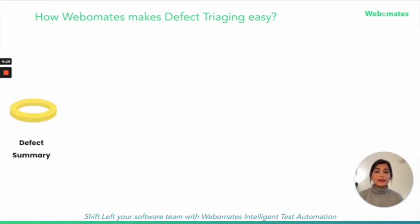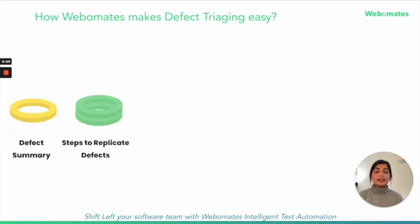Defect summary: it provides a short account of the defects discovered. Replication steps: this area contains detailed steps to help the developers replicate the defect. The tester provides console logs in the replication steps that quickly helps the developer catch the issues.